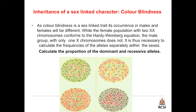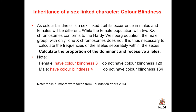Calculate the proportion of the dominant and recessive alleles. Note that we have females with color blindness equal to 3, and females who do not have color blindness equal to 128. In males, we have color blindness equal to 4, and males who do not have color blindness equal to 134.